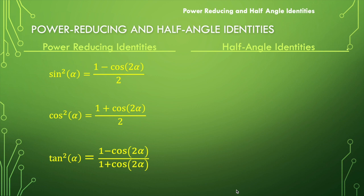These are actually derived from the power-reducing identities. So we take those power-reducing identities that we came up with in our last video, and notice we have a 1 to 2 ratio — we talked about that a little bit in the last video as well. So a 1 to 2 ratio on our arguments.